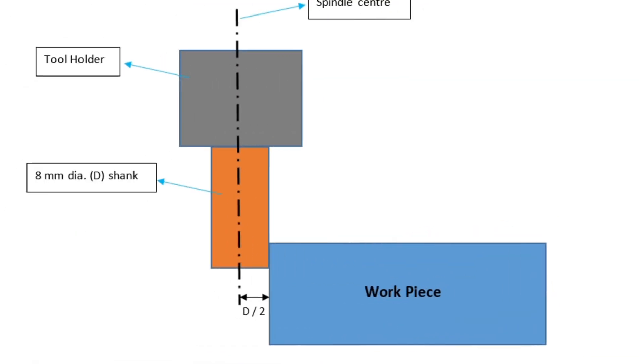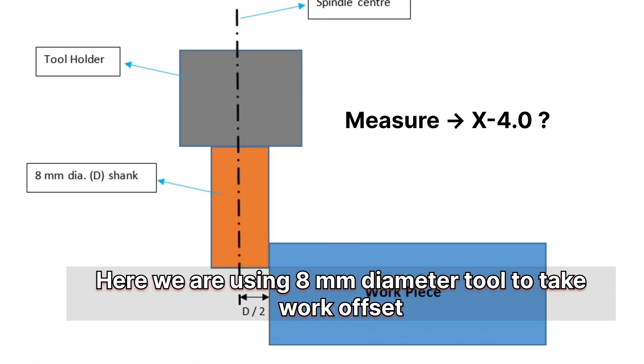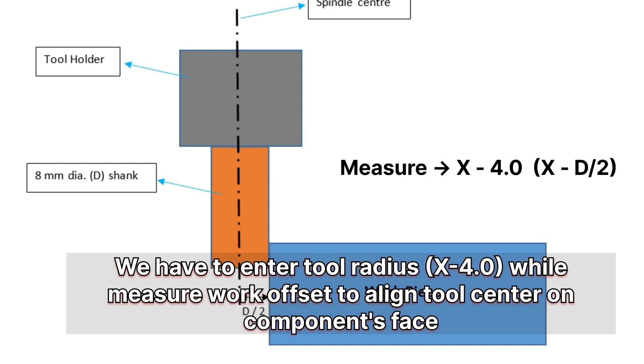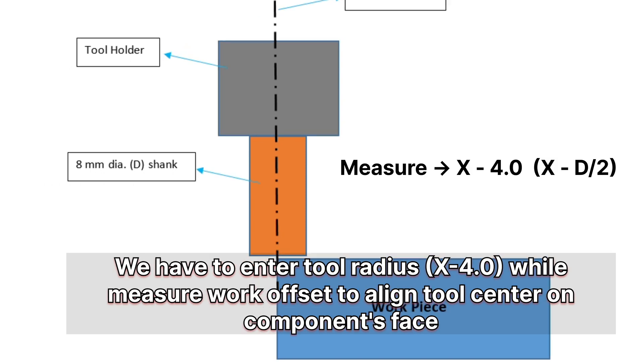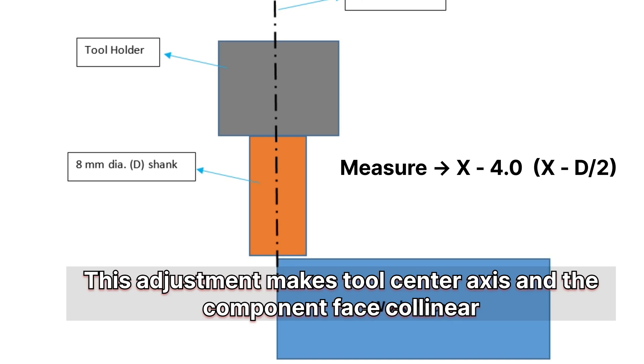Here we are using 8mm diameter tool to take work offset. We have to enter tool radius while measuring work offset to align tool center on component's face. This adjustment makes tool center axis and the component face collinear.